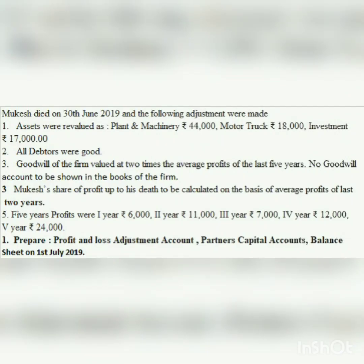Moving to the asset side: plant and machinery, motor truck, debtors, investment, and bank - all go under assets. Now let's read the adjustments. Mukesh died on 30th June. The financial year starts in April, so April, May, June - he died 3 months after the new financial year began. All assets were revalued: plant and machinery is now 44,000 (increased), so P&L adjustment credit side gets the gain. Motor truck at 20,000 also increased. Investment at 17,000 decreased, so P&L adjustment debit side.